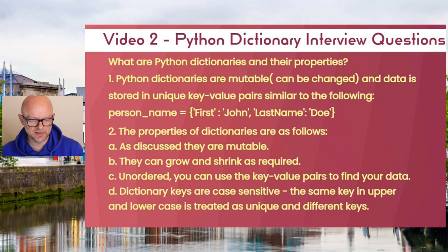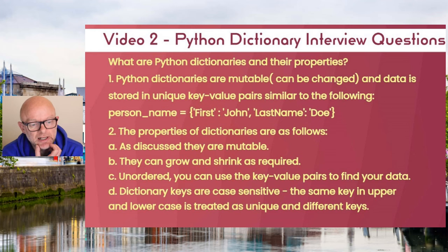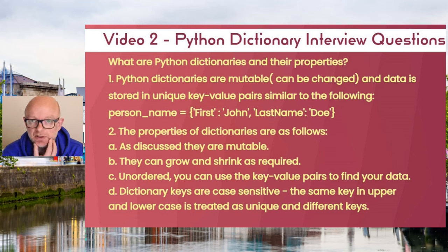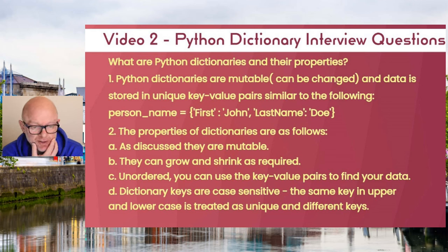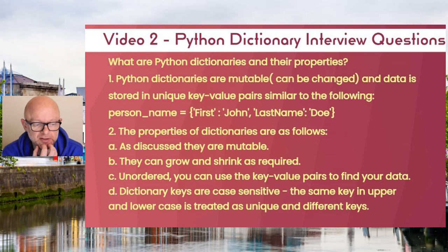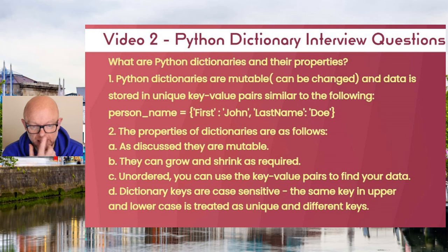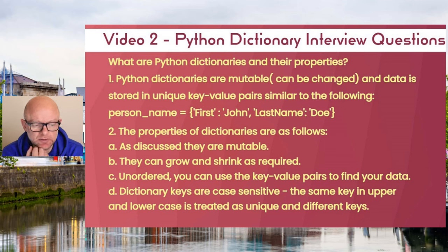Let's look at some of the questions you may come across. The first thing you might be asked is about the properties. There's probably more than these, but I've picked out the most obvious ones. Dictionaries are mutable, so you can change the values with key-value pairs. That's one of the good things about dictionaries — because they're mutable, you can manipulate them the way you want. They can also grow and shrink as required, so you're not restricted in the size of your dictionary.